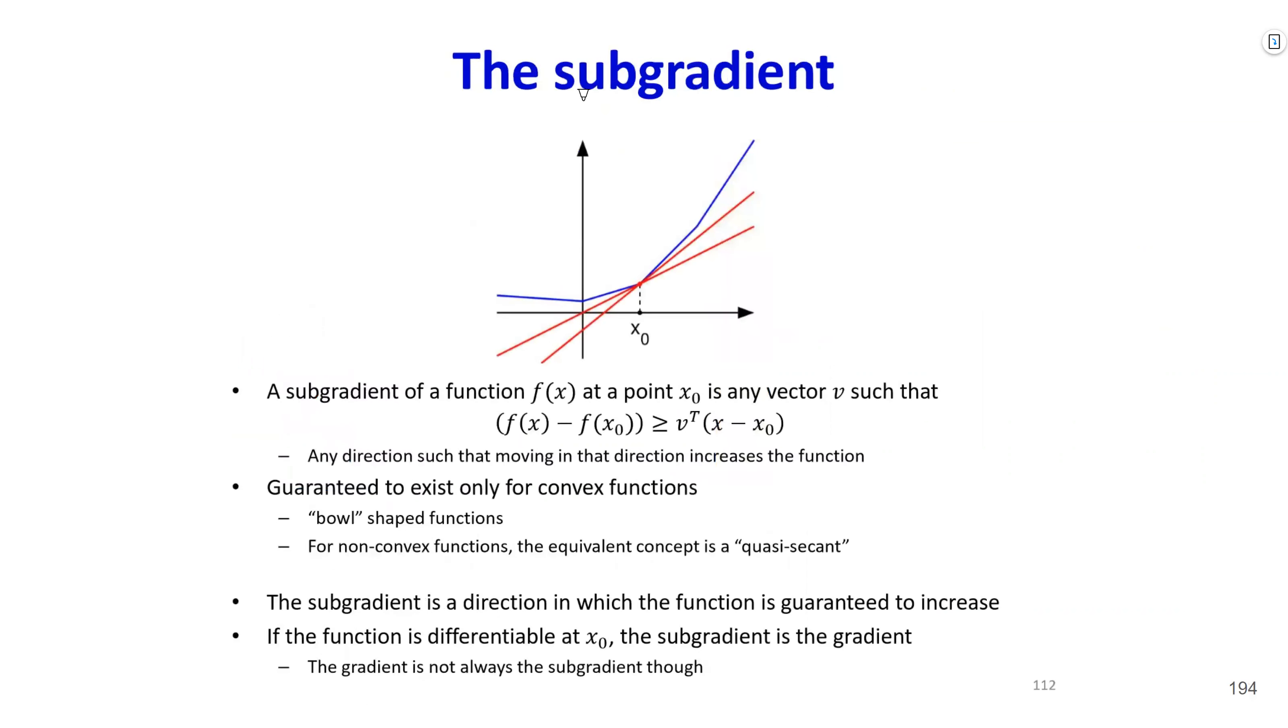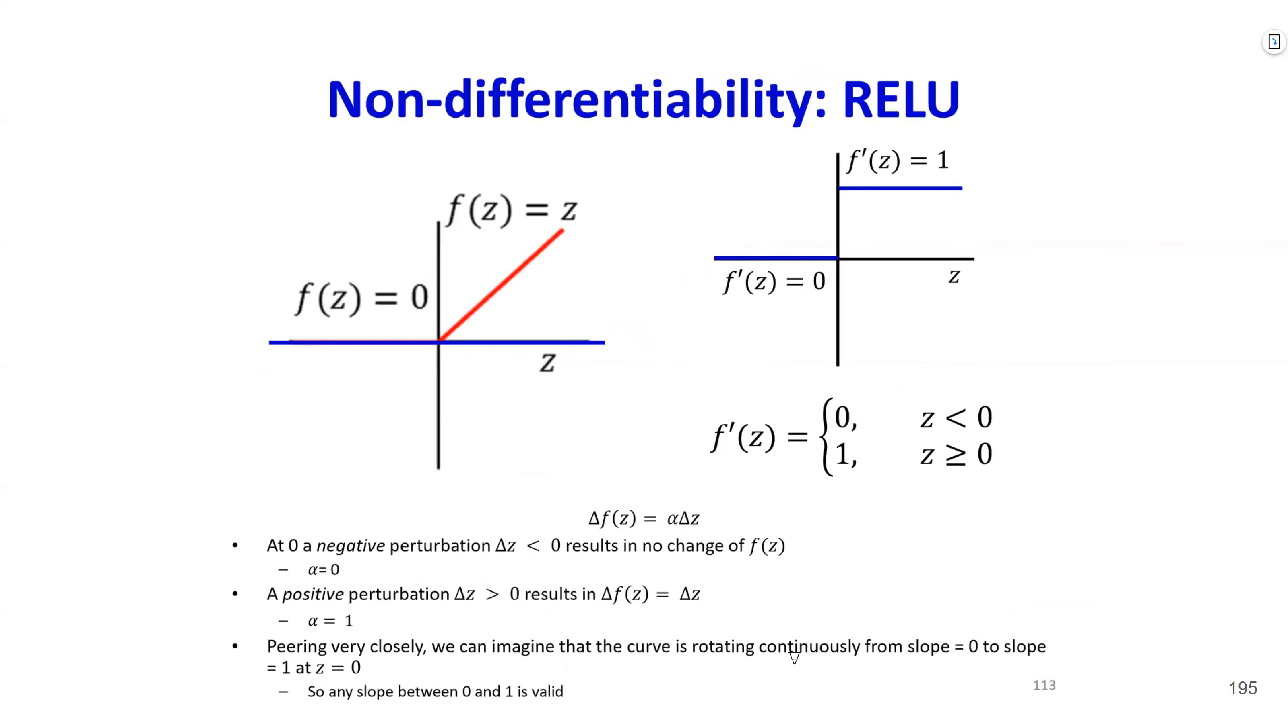In this case, we use sub-gradient. A sub-gradient is defined as this. Sub-gradient of a function f(x) at point x0 is any vector v such that f(x) minus f(x0) is larger than v transpose times x minus x0. This means any direction such that moving in that direction increases the function. And sub-gradient is guaranteed to exist only for convex functions. Convex means bowl-shaped. For non-convex functions, there is an equivalent concept, quasi-secant. Therefore, the sub-gradient is any direction in which the function is guaranteed to increase. If the function is differentiable, then the sub-gradient is the gradient.